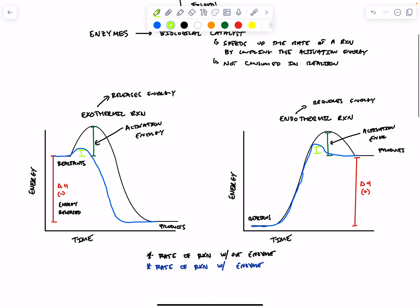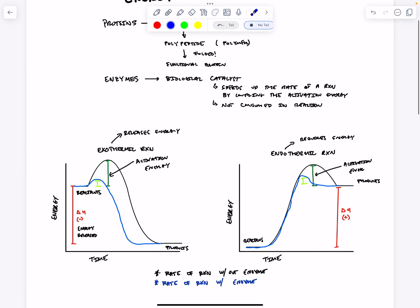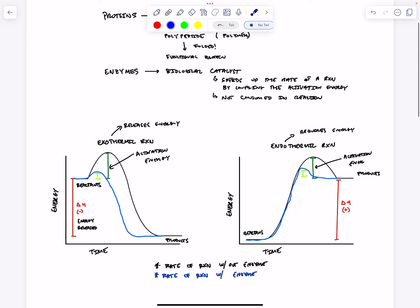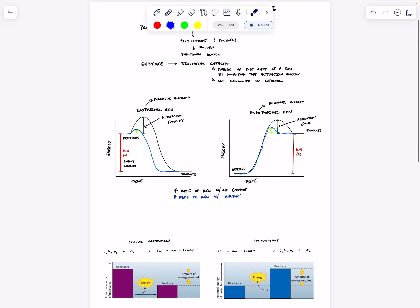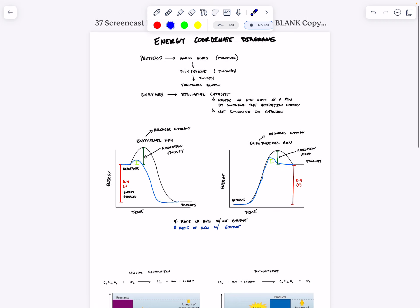How do enzymes accomplish this? How do they lower the energy of activation? The answer is by positioning their reactants in a very specific way in order to get the reaction to happen. We're going to talk more about how that happens in class tomorrow. But for today, this is all you need to know and understand: an enzyme is a biological catalyst that speeds up the rate of the reaction by lowering the amount of energy needed to get that reaction started or to complete that reaction. And it's not going to be consumed, so it can be used over and over again to catalyze many hundreds or thousands or millions of reactions.